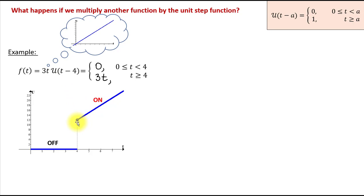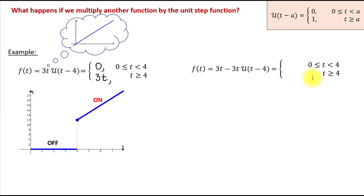Here's one more example. We now have a function in the form 3t minus 3t times the unit step function at 4. Since the unit step function is involved, this function f is also piecewise defined. On the interval from 0 to 4, the unit step function equals 0, so the product of that and 3t is also 0. Therefore 3t minus 0 is just 3t — that is the first piece.